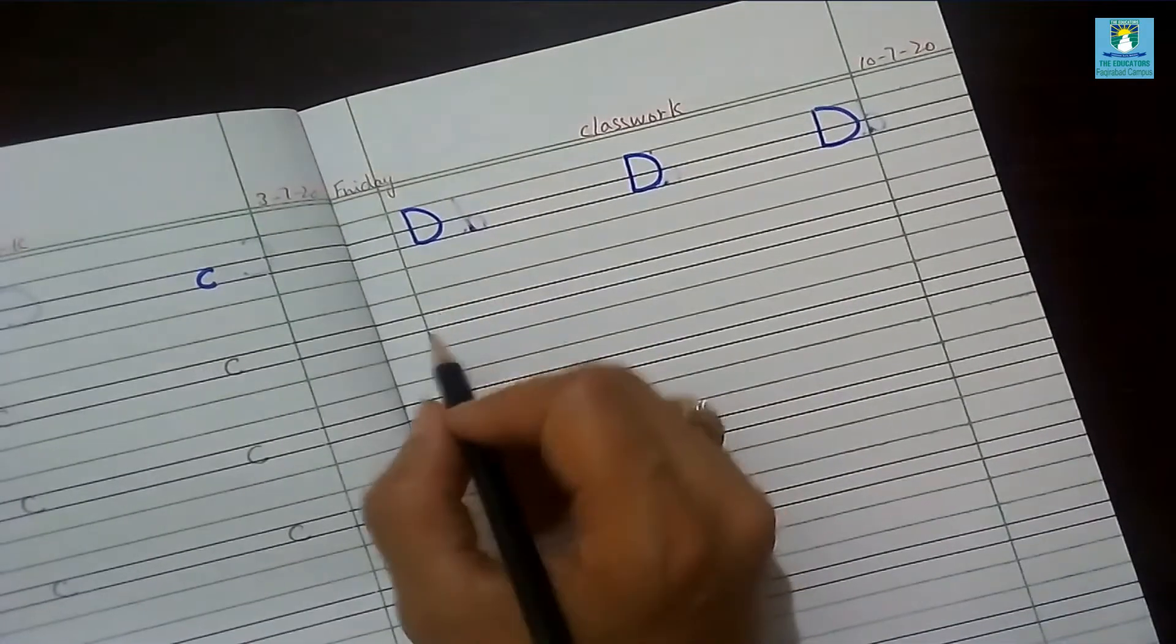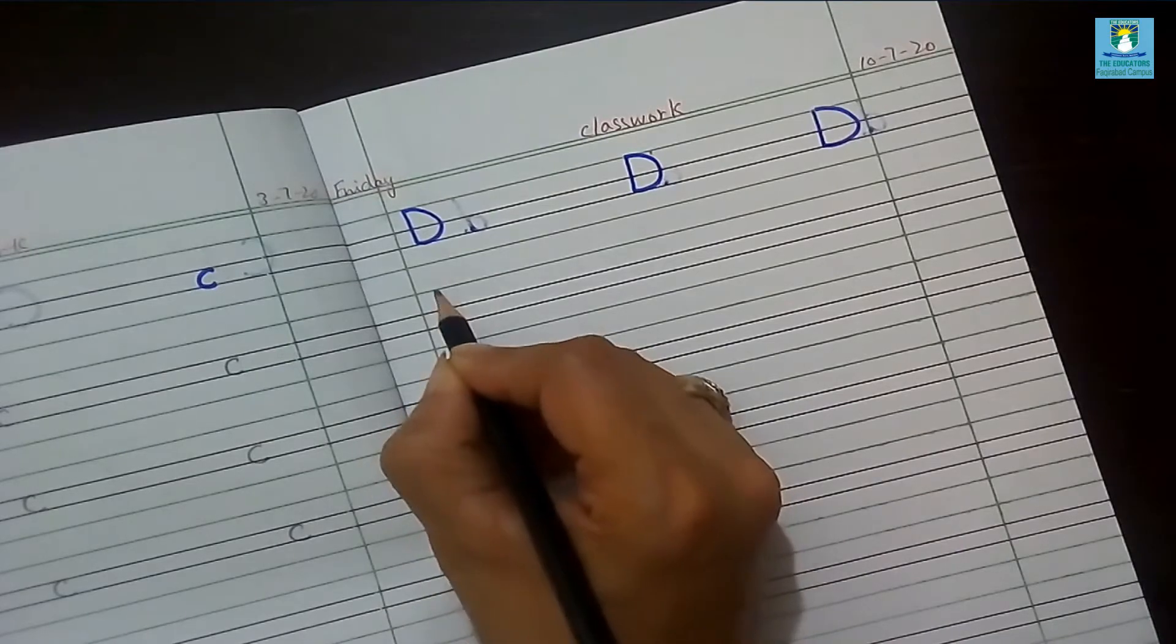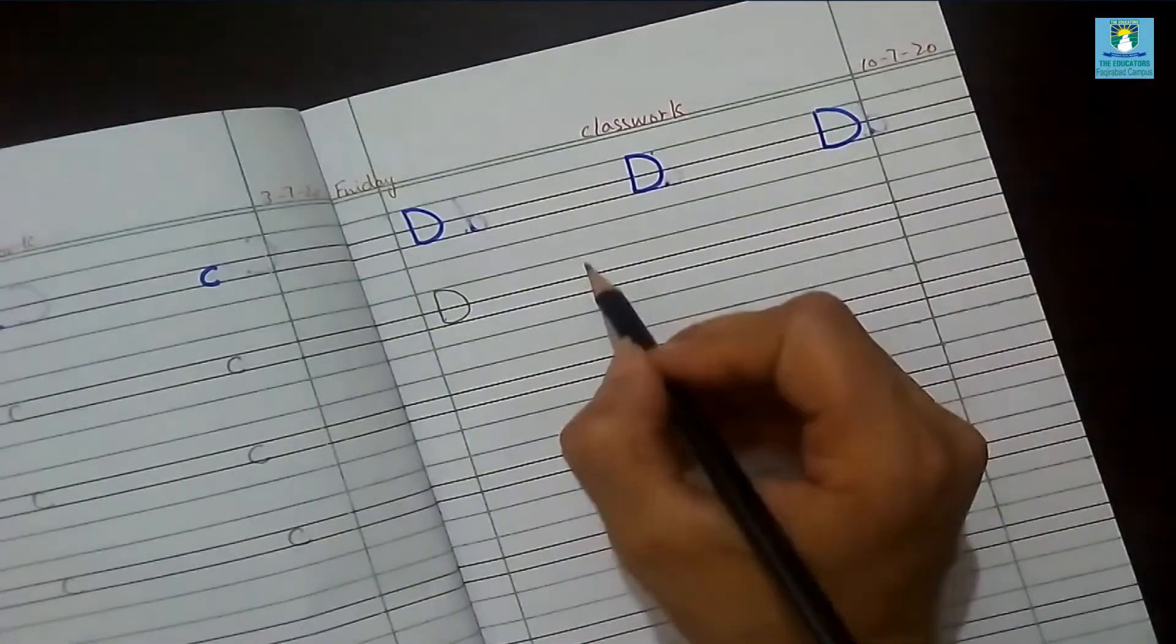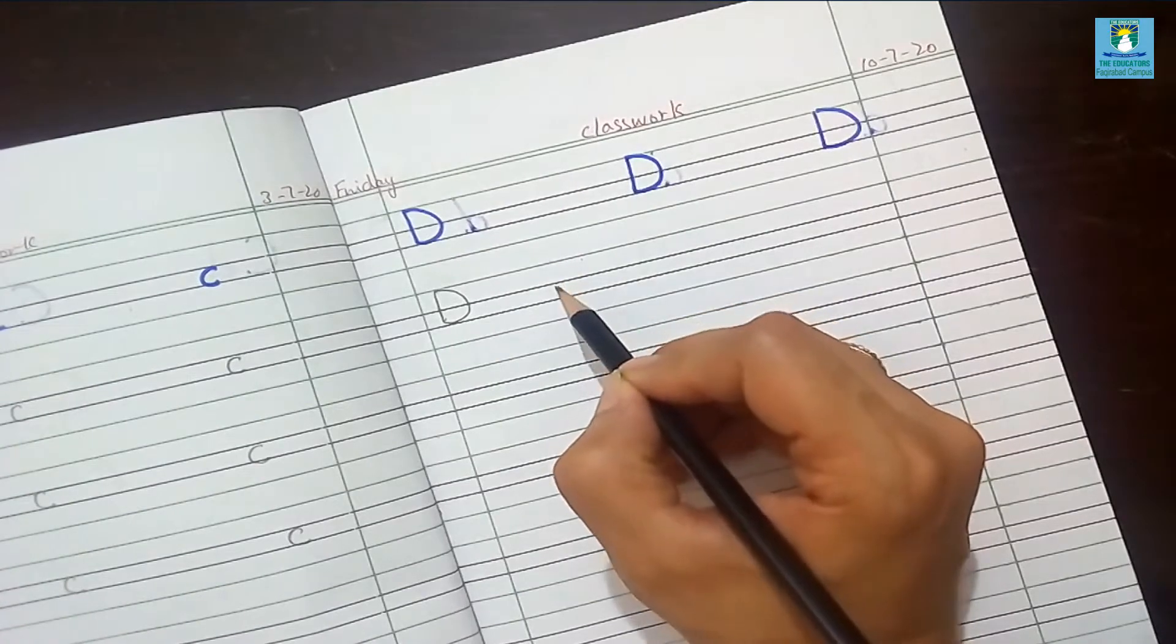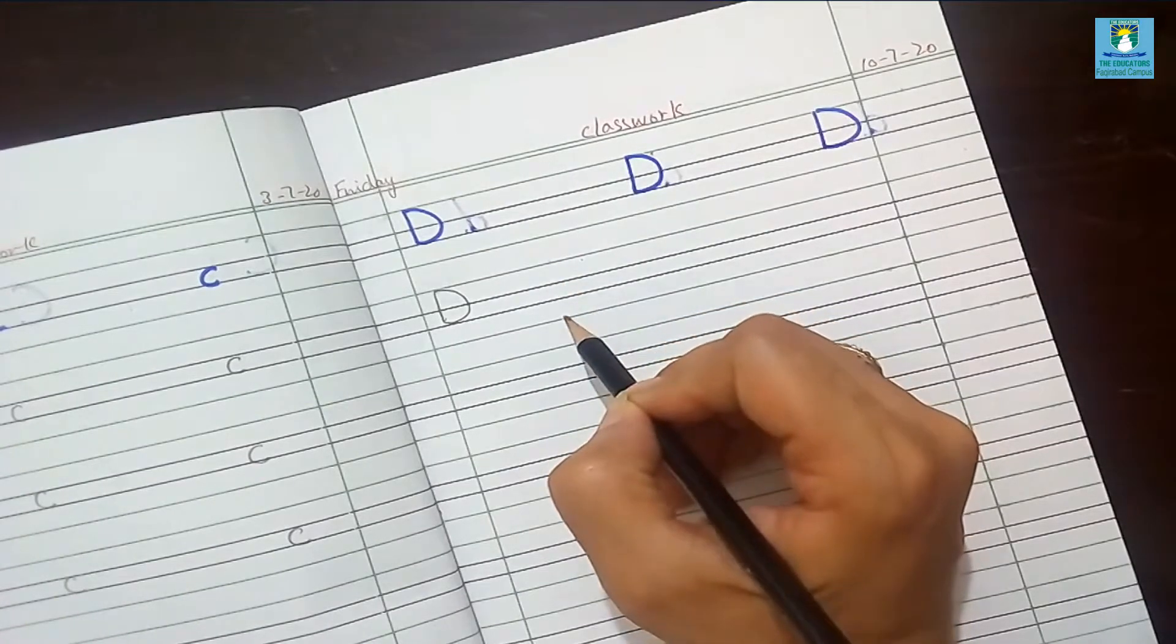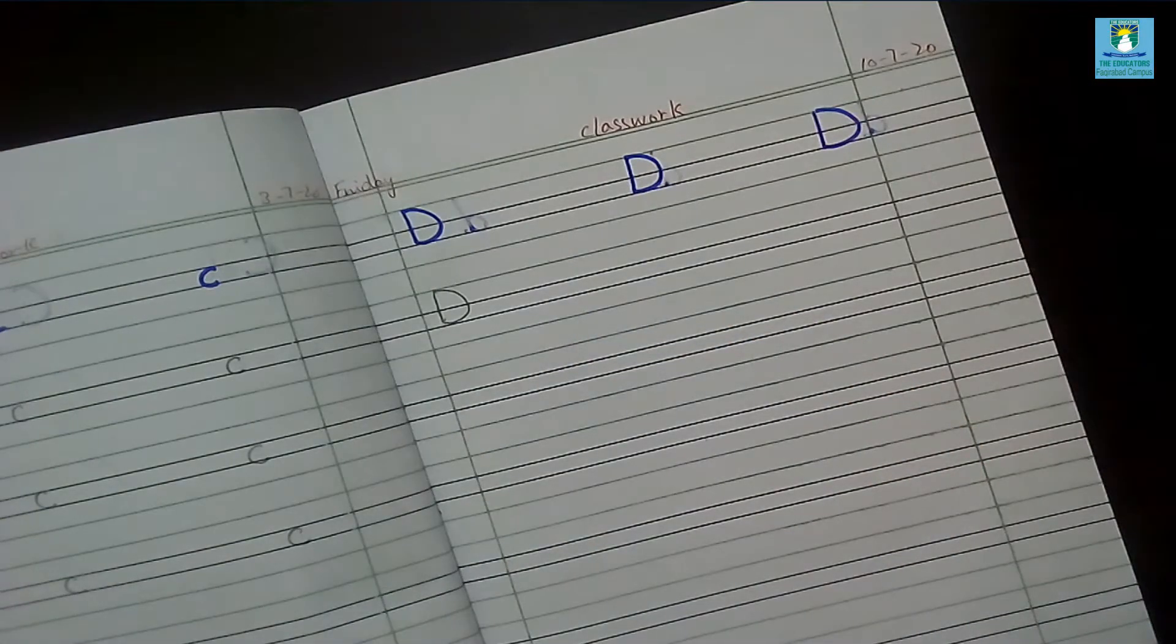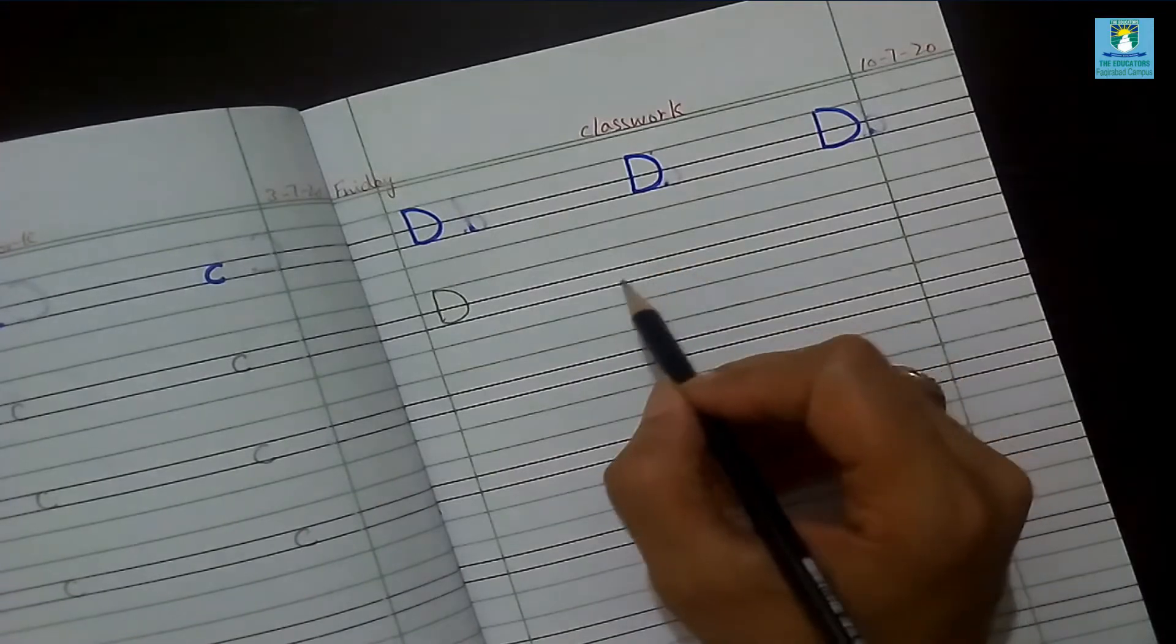And then write. Start writing D. It will start from the skyline and end on the grass line. I hope all of you now know the names of the four lines. I will repeat: skyline, fence line, grass line, root line. Understand? There are four lines in English and we can write on these lines.